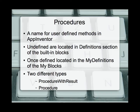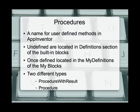We can also make user-defined methods. We can make our own methods — things we want to see happen. Procedures are what we use for that inside App Inventor. They're undefined at first and are set in the definition section of the built-in blocks. Once defined, they're located in the my definitions section of the my blocks set in the code blocks editor. We have two types: a procedure with result that gives us information back, or a procedure that simply does something. For most of what we'll be doing, we'll use the procedure by itself.